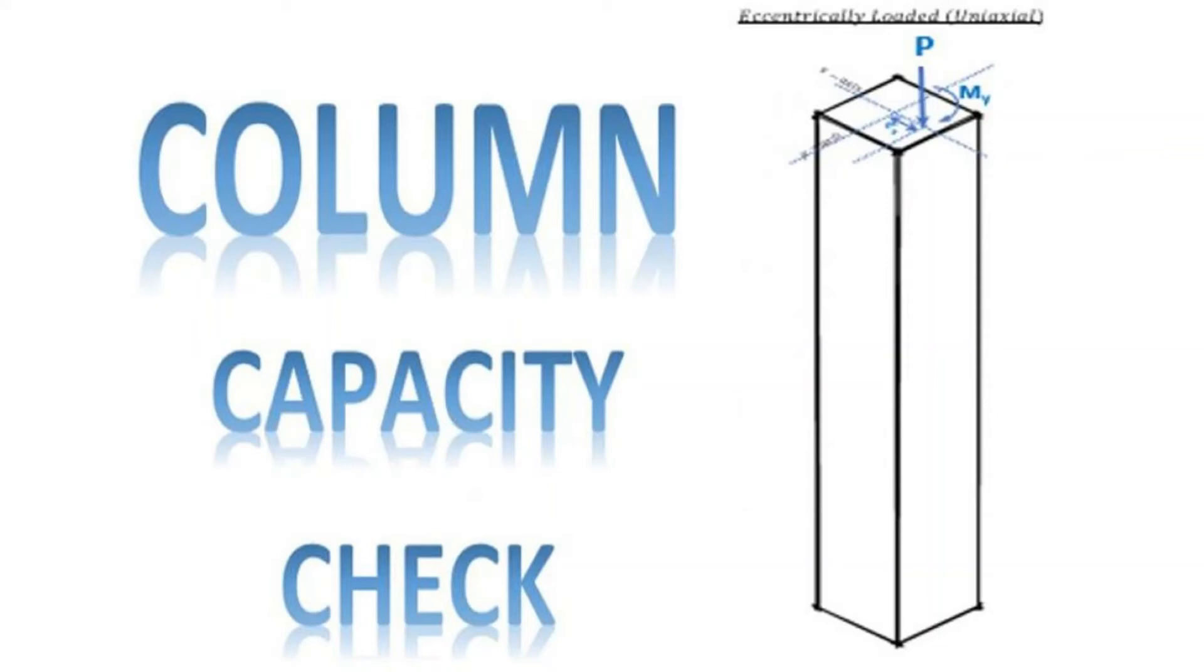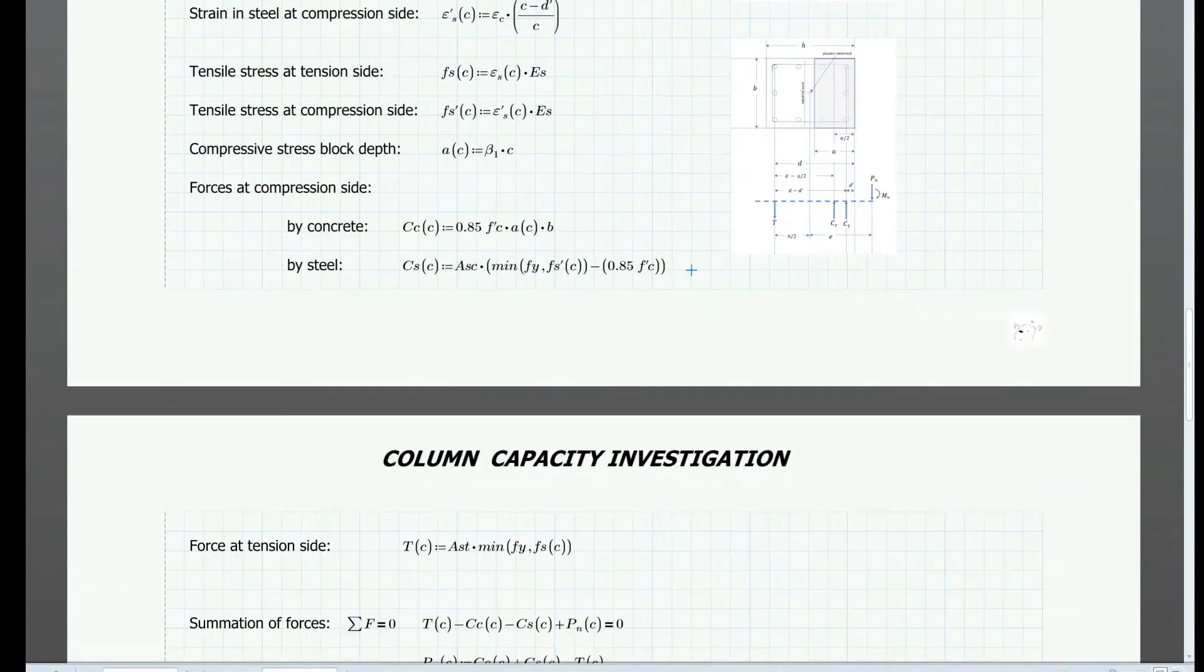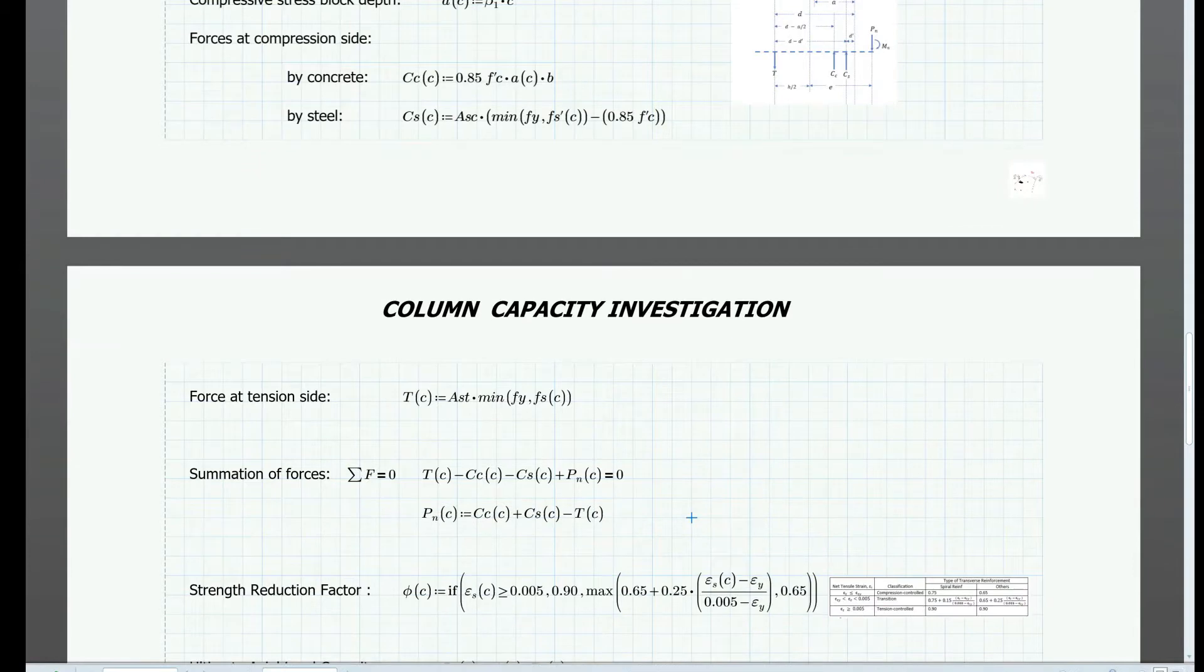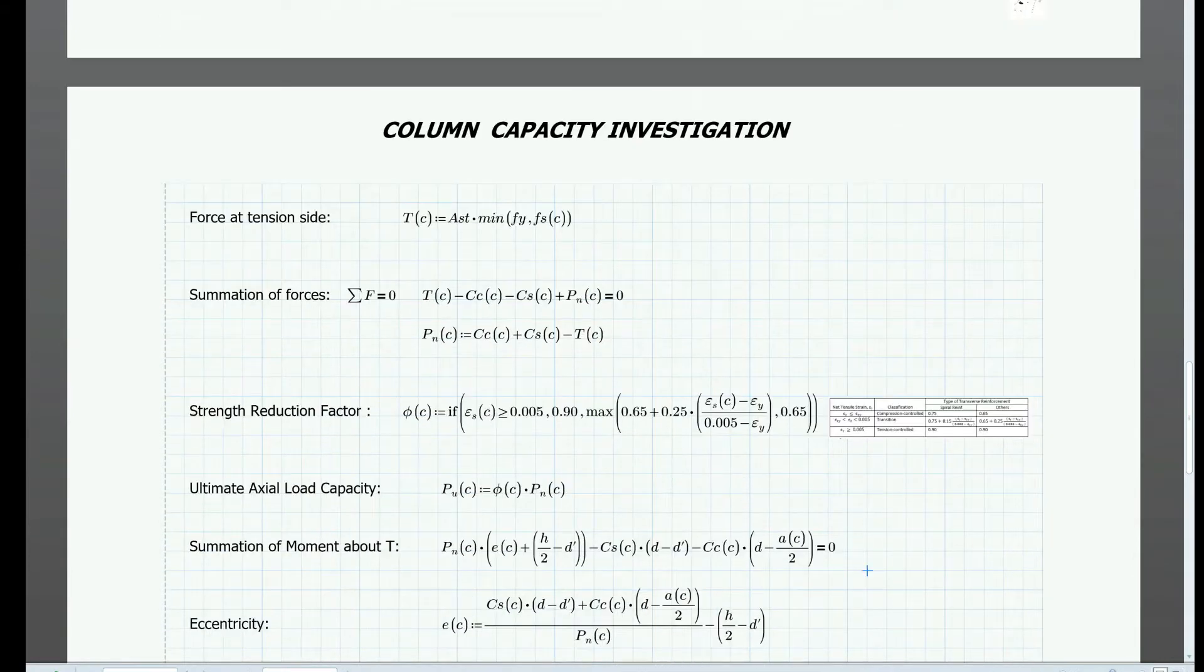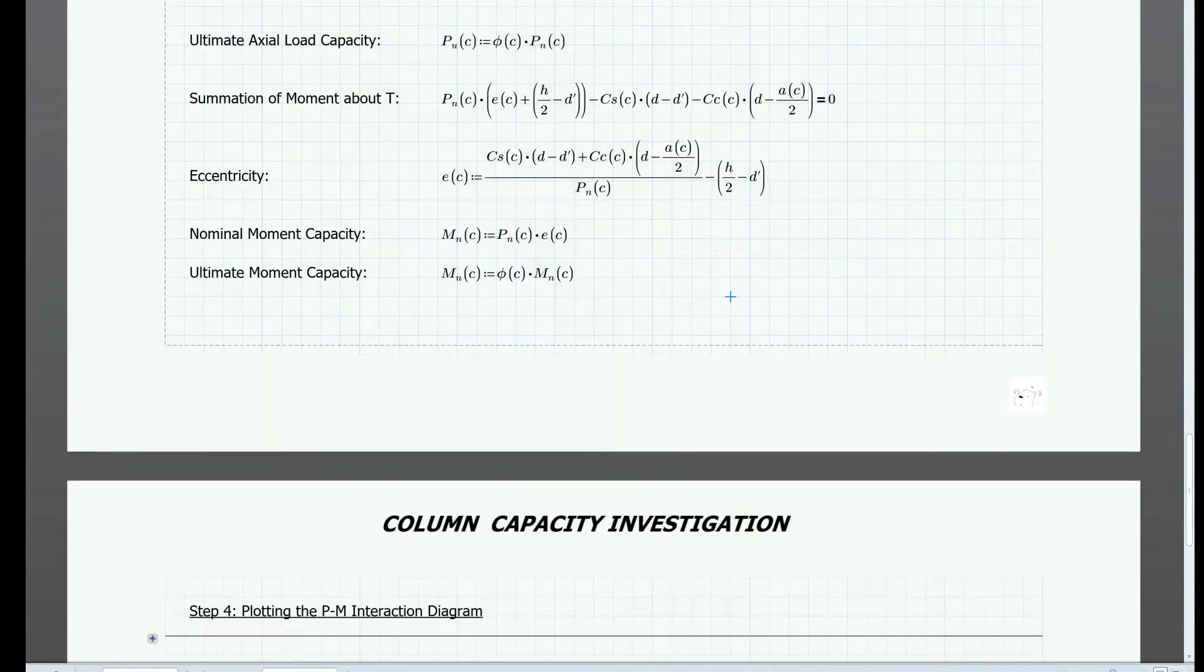Hey everyone! You may already have watched my video on how to make a column interaction diagram, where we defined all equations in terms of C, which is the distance to the neutral axis.